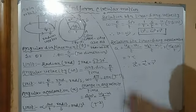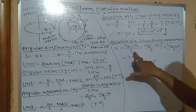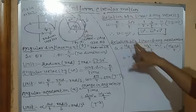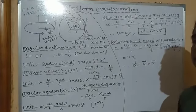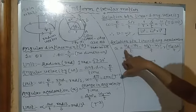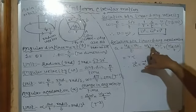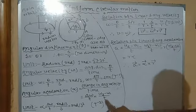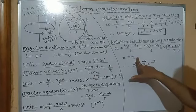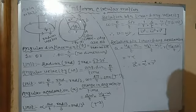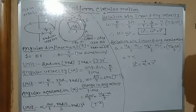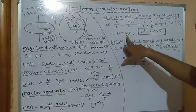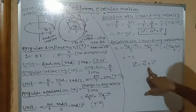Now the relation between linear and angular acceleration. Linear acceleration equals rate of change of velocity: (v₂ − v₁) by t. Since v equals omega times r, we substitute: a equals (ω₂r − ω₁r) by t, and taking r common, a equals r times (ω₂ − ω₁) by t. Since (ω₂ − ω₁) by t equals alpha (angular acceleration), we get a equals r times alpha. So linear acceleration equals angular acceleration times the radius vector.